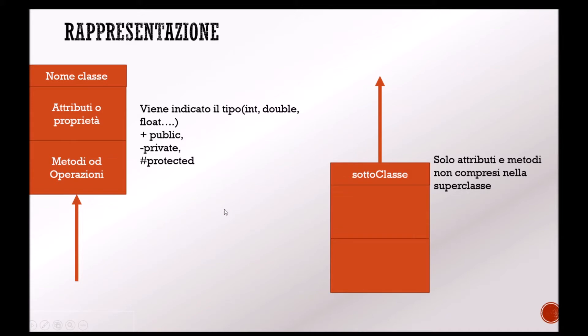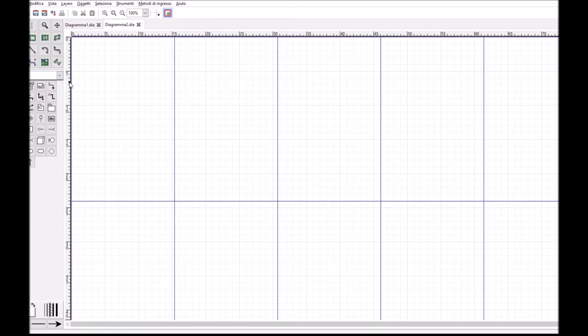Let's see briefly with DIA how to draw a class. This is the application that you can download from the internet. There are a series of symbols and arrows that you will learn to use very well next year when we deal with databases. It is possible to have a series of diagrams — you choose UML. The symbol to represent a class is the first one you see; hovering over it, the word 'class' appears.